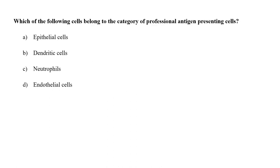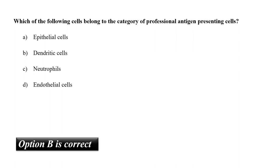Which of the following cells belong to the category of professional antigen-presenting cells? A. Epithelial cells, B. Dendritic cells, C. Neutrophils, or D. Endothelial cells? The category of professional antigen-presenting cells includes dendritic cells, macrophages and B cells (B lymphocytes). In the given options, dendritic cells are the only ones that belong to this category. So the correct answer is option B.